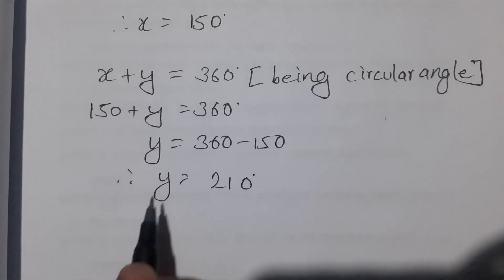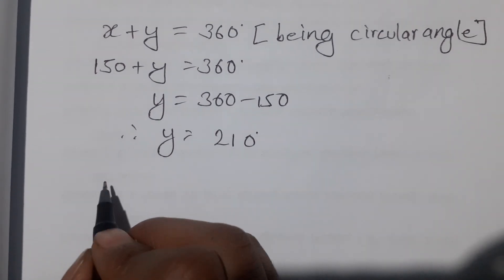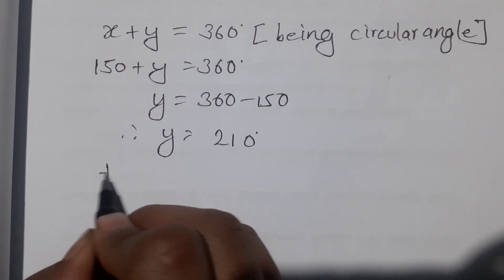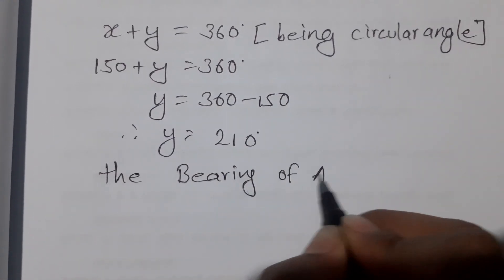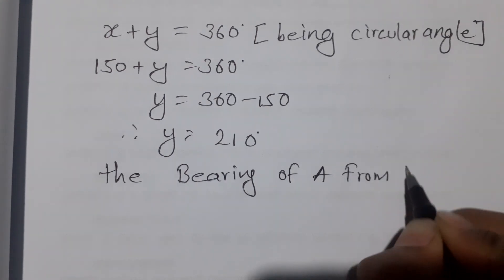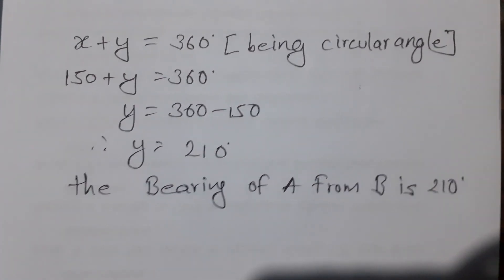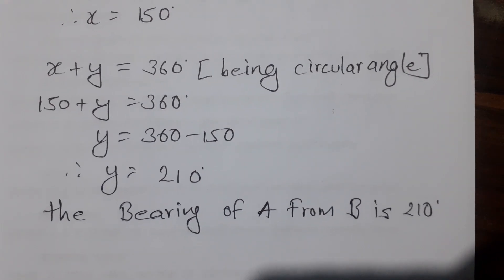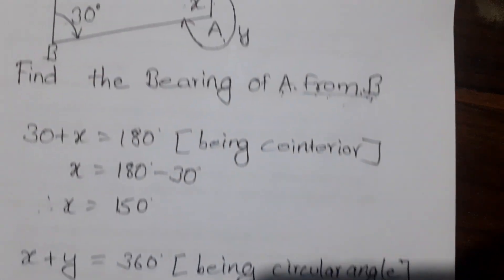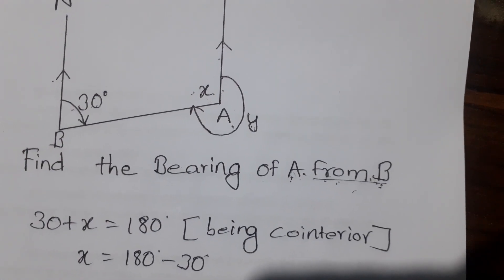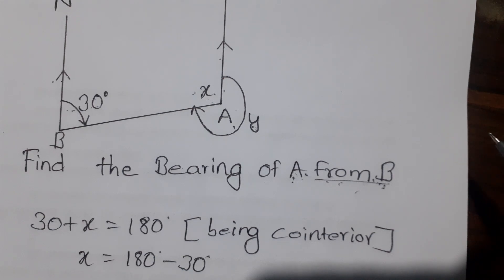In this way, y = 210 degrees. So the bearing of A from B is 210 degrees. The angle of A from B is 210 degrees.